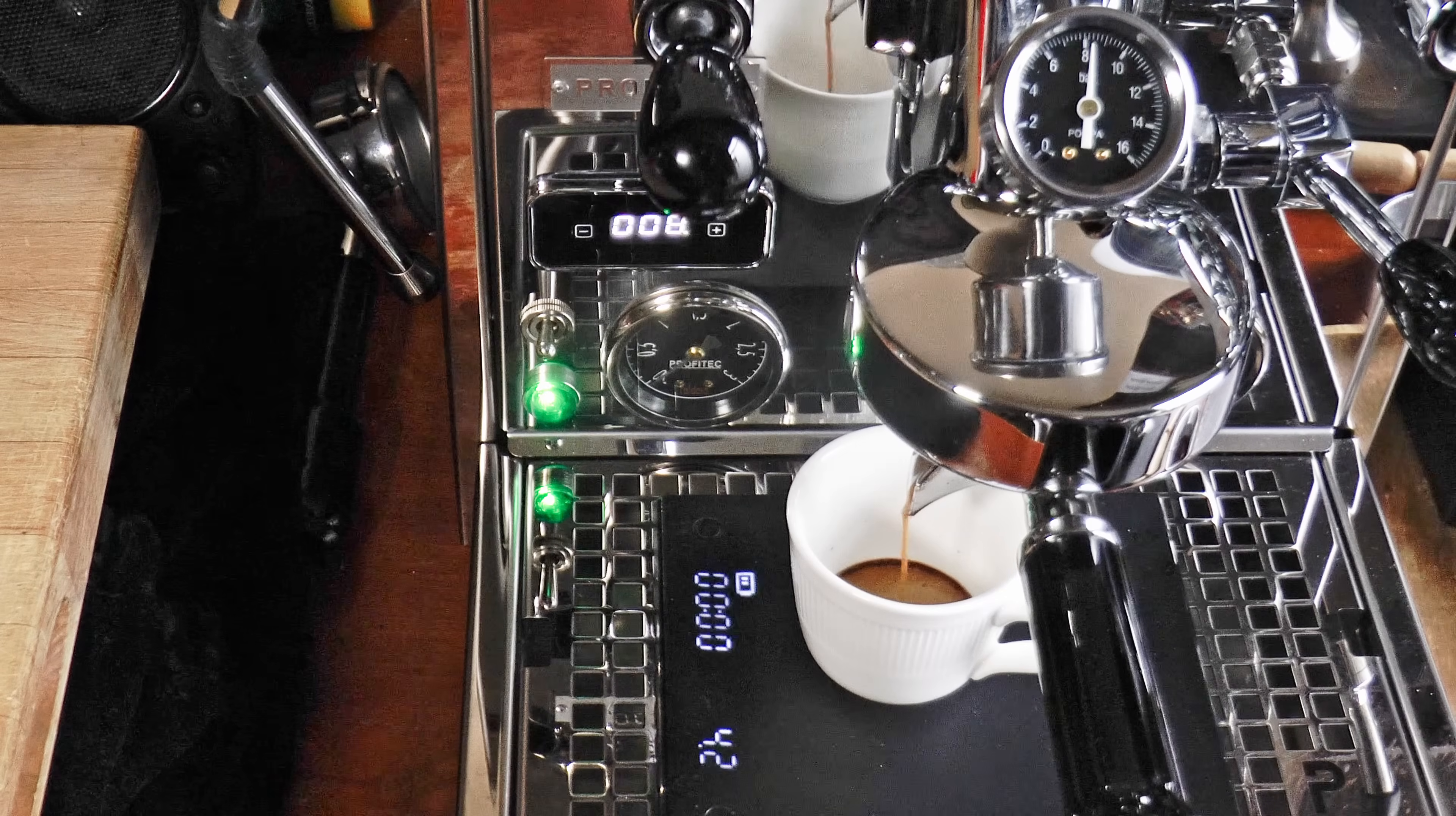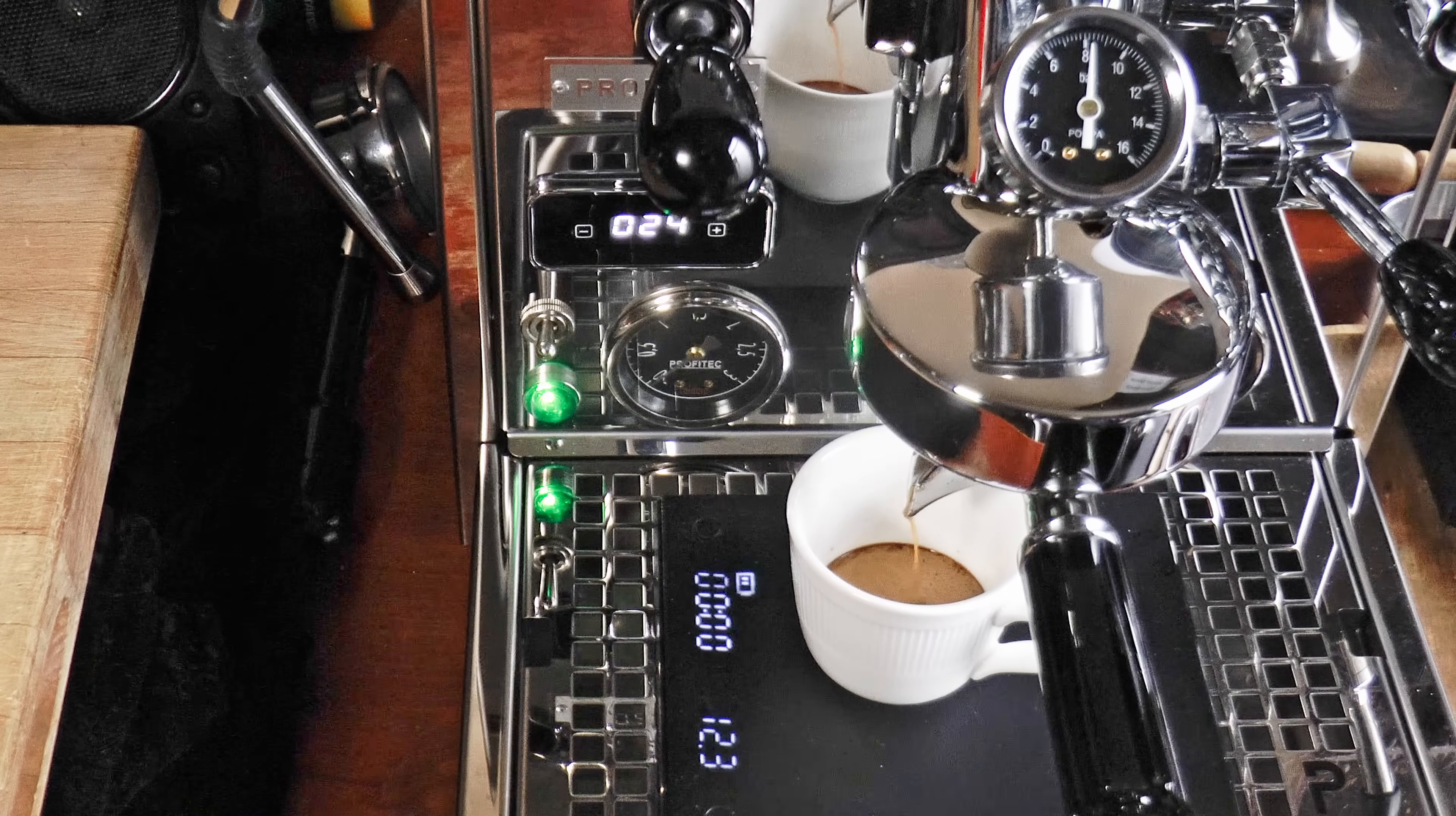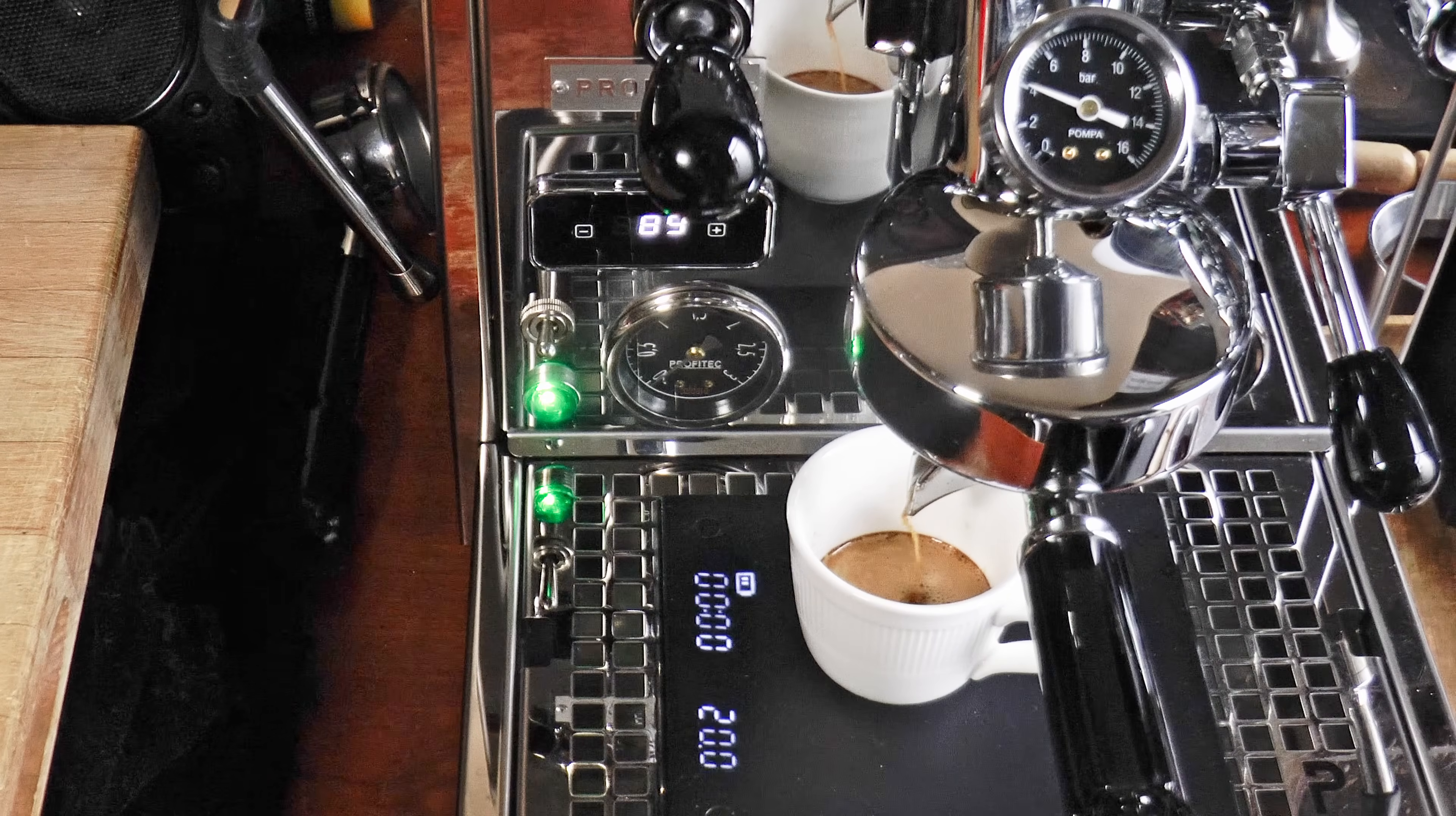Once it registers a gram on the scale, which I like to see happen in 10 or 20 seconds depending on the size of the dose, I'll engage the pump and start timing from that moment, looking for 2 seconds per gram or milliliter out, which you can see is right where we are. I like 8 or 9 bar pressure. I'm set up for 8 at the moment. When I hit around 17 or 18 grams yield, I'll switch off the pump and let it coast to the target of around 22. Just take care not to open the exhaust valve prematurely.